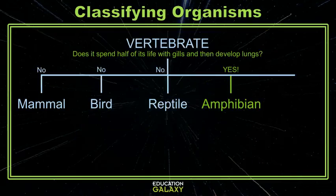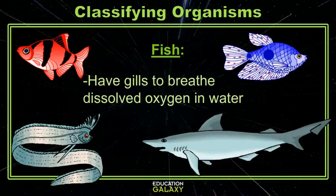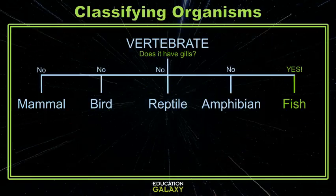Our last class in the animal kingdom is fish. This group is enormous and includes a lot of different animals. The one thing they have in common is that they all live underwater and have gills to breathe dissolved oxygen in water.